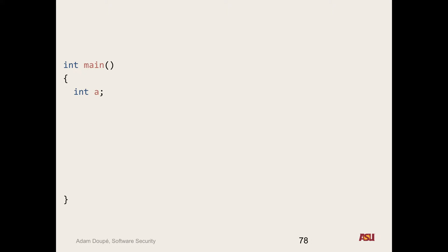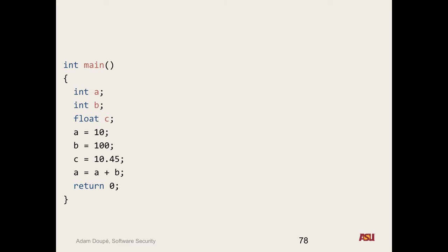Every local variable is going to be some fixed offset from the base pointer — that's exactly how local variables are implemented in functions. An important concept is that there can be multiple invocations of the same function on the stack at once — that's how we have recursion. Because of this, every different function frame is going to have its own base pointer at different memory locations. In x86, the frame pointer is the base pointer, and it's stored in the register EBP. So we have a C program with variables A, B, and C: A equals 10, B equals 100, C equals 10.45, then A equals A plus B, and return zero.